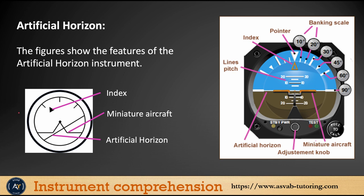Let's learn some terminology. For the artificial horizon, this triangle is called the index, and this is called the miniature aircraft. This line is called the artificial horizon — it could be in different orientations.